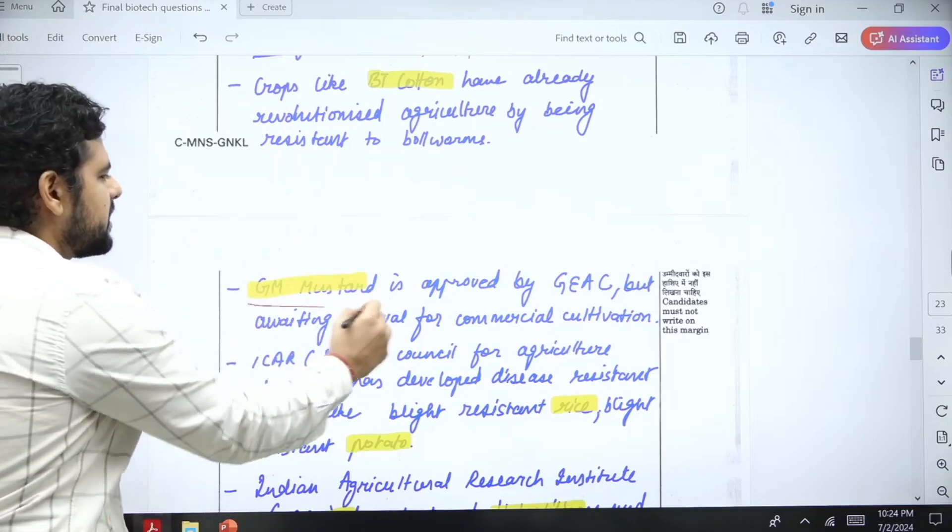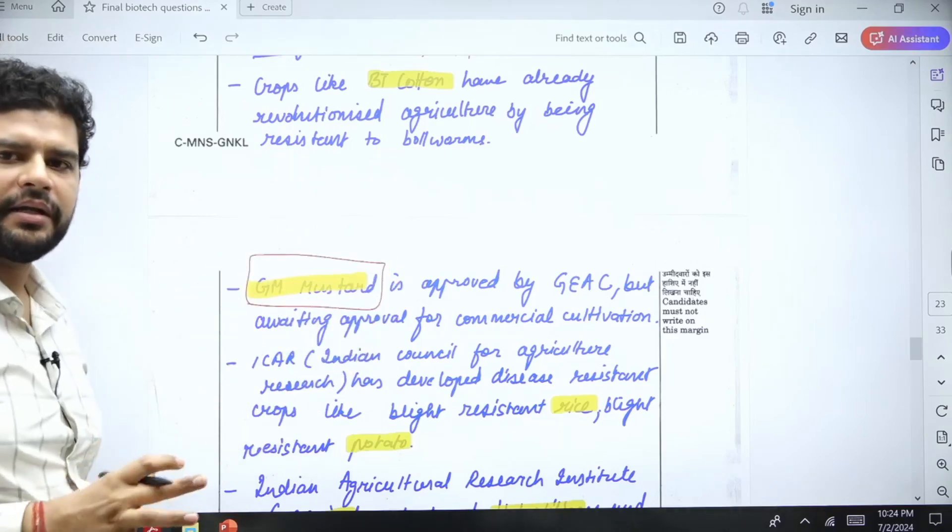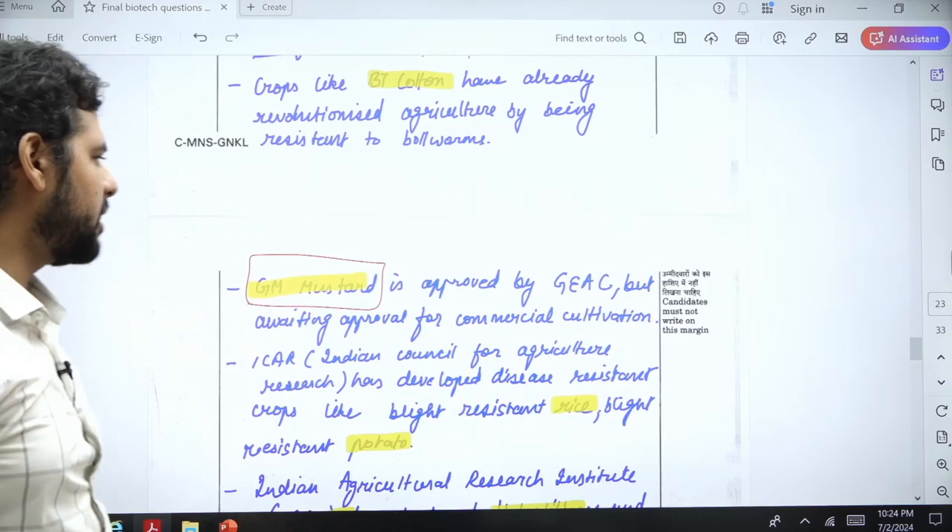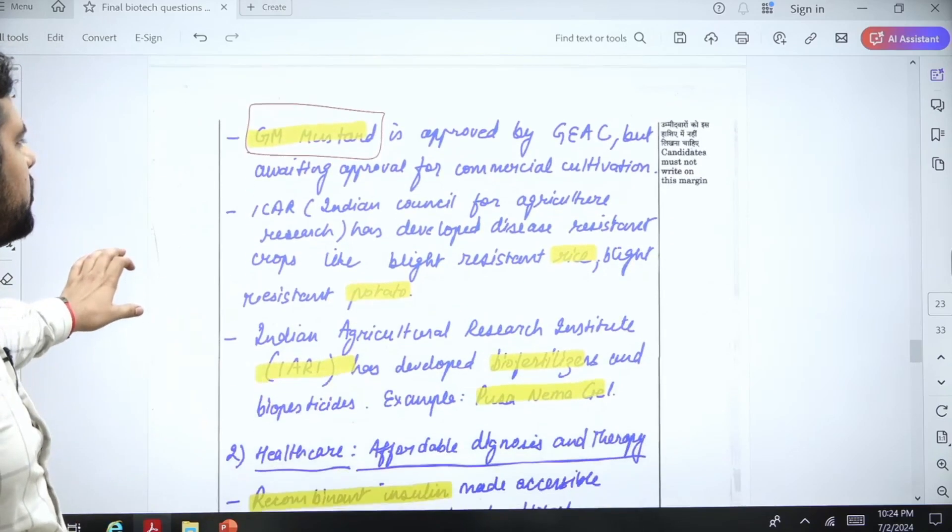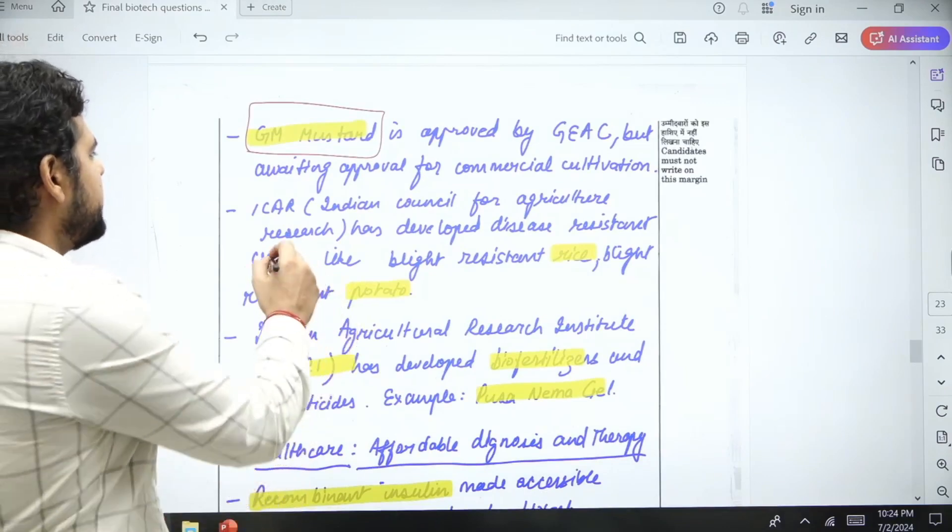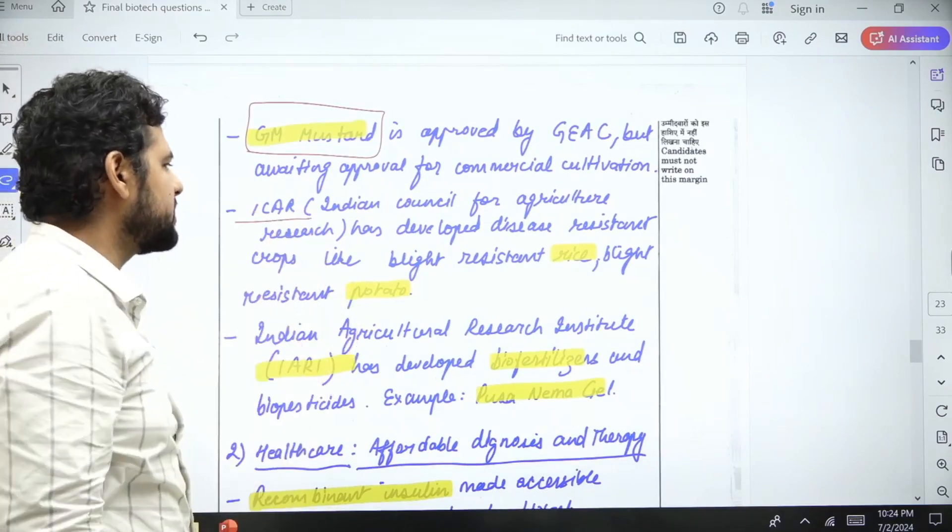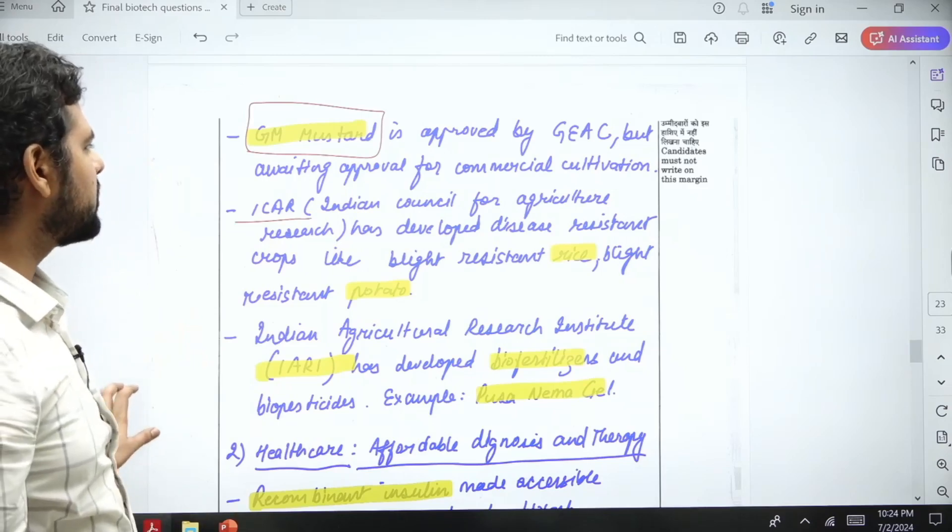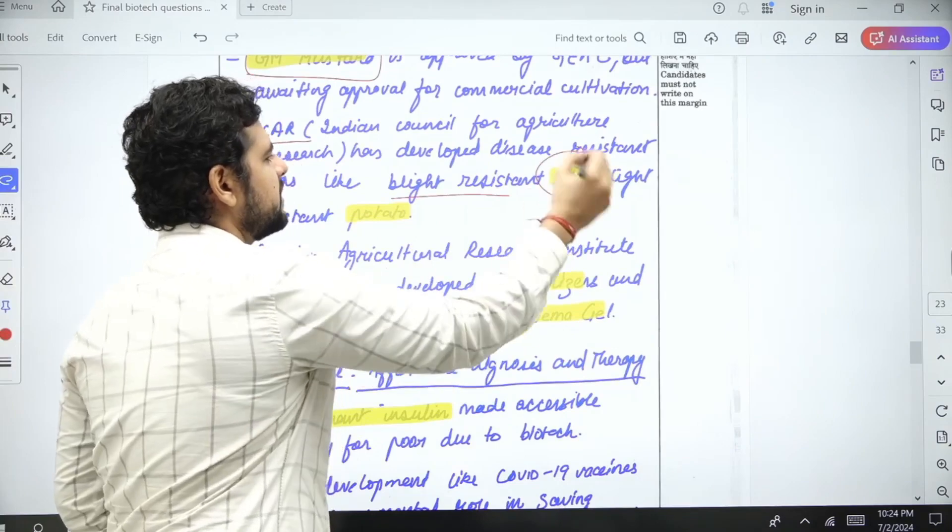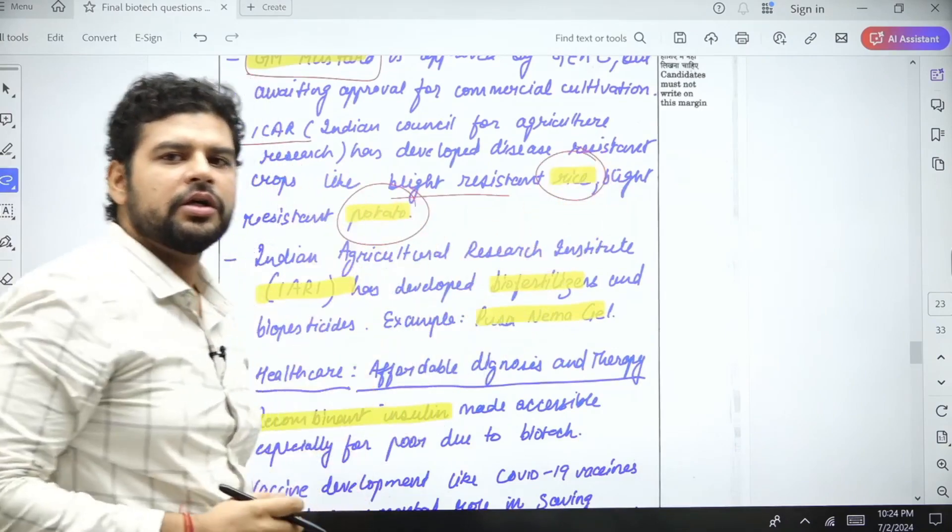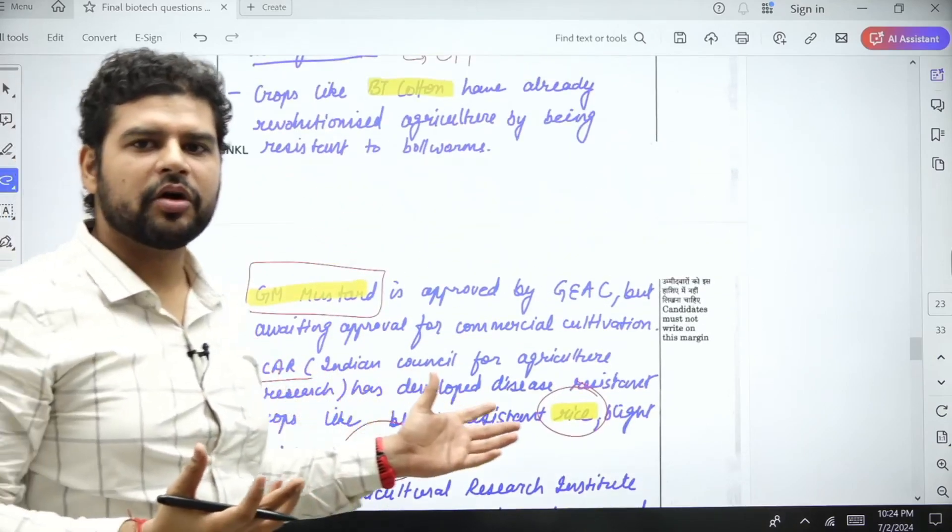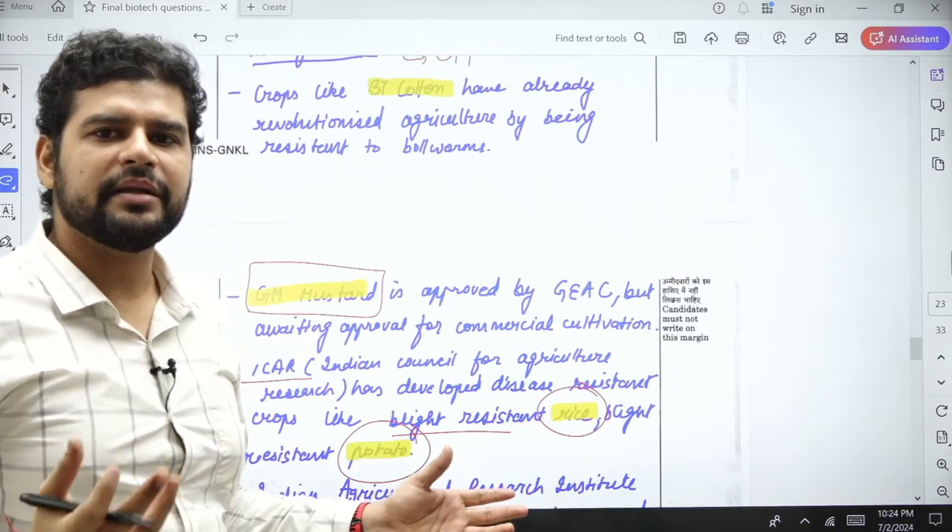Next, GM mustard is approved for environmental protection but commercially it is not yet approved. This can be used to increase productivity. ICAR, Indian Council for Agriculture Research, has developed new drug-resistant crops: blight-resistant rice and blight-resistant potatoes. These are the examples. I am not describing anything because the question is saying directly tell me the applications, directly tell me the achievements.